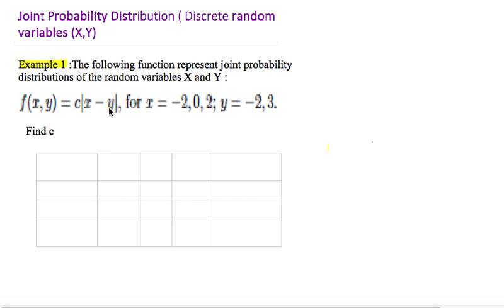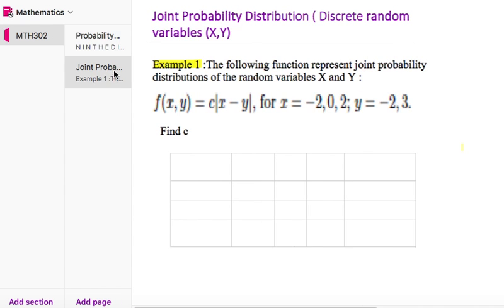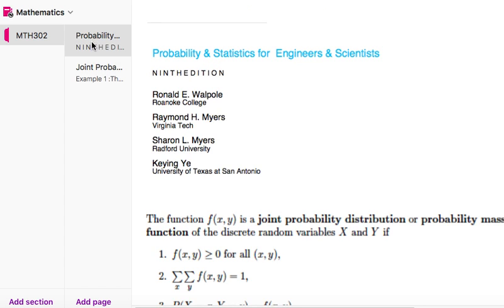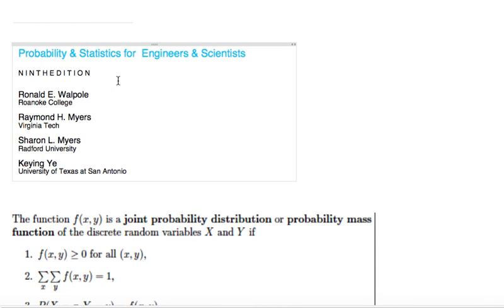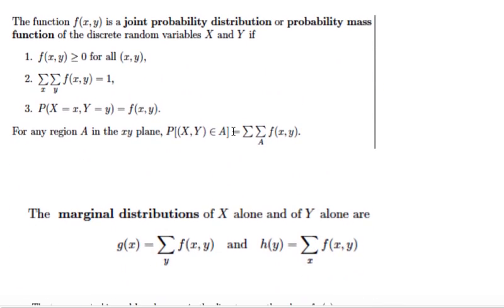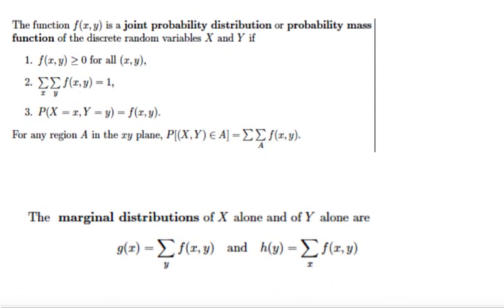In this video I am going to share about the joint probability distribution for the discrete random variable — a function of two variables. 'Joint' means when we have two random variables associated. The book I am following for notation purposes is 'Probability and Statistics for Engineering and Scientists.' Before switching over to questions based on joint probability distribution, let us first recall the notation used.